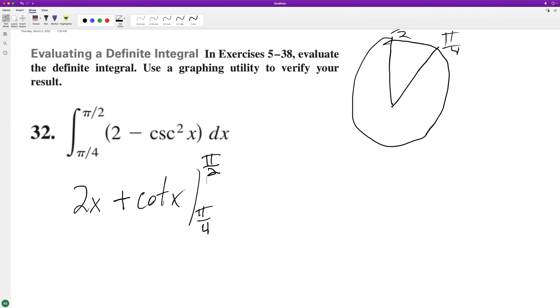Okay, so starting off two times pi over two plus the cotangent of pi over two.